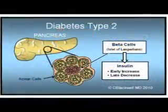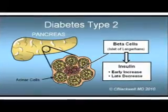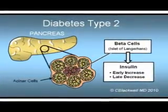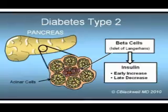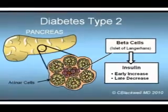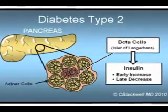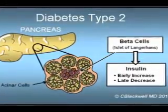Early in type 2 diabetes, the insulin-producing cells may work harder to produce more insulin than normal. Eventually, those cells may become burned out and the production of insulin drops, requiring use of supplemental insulin.